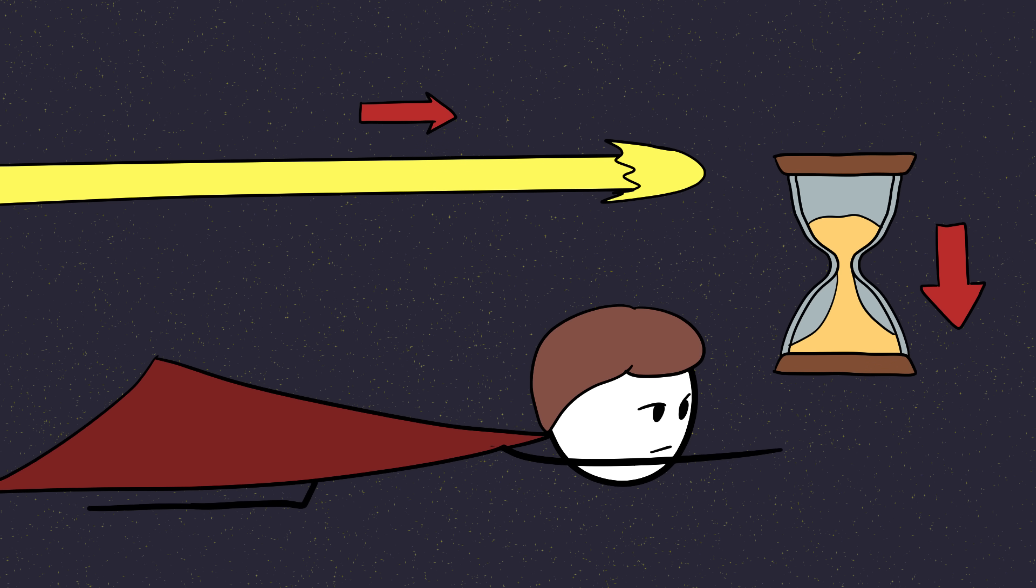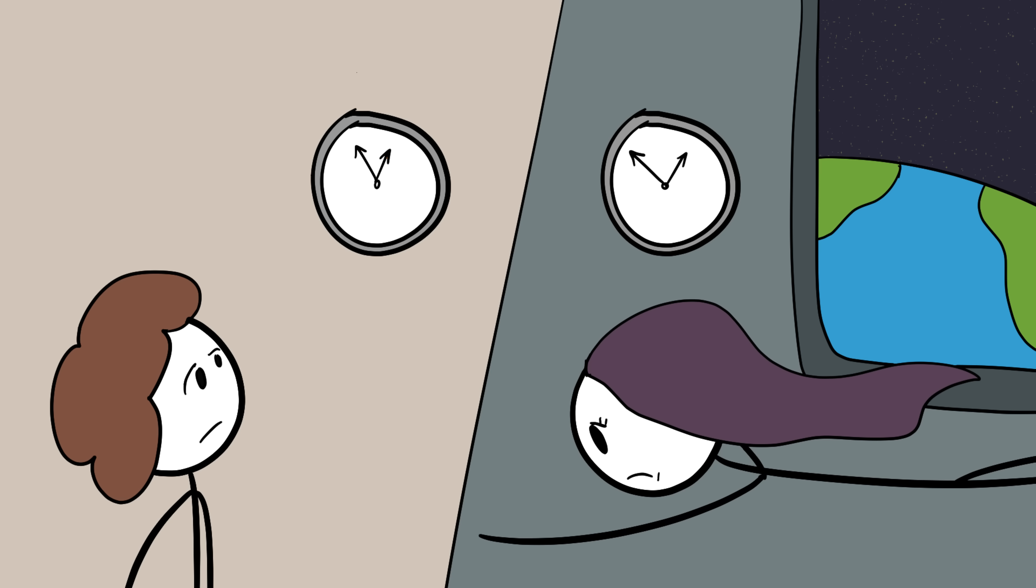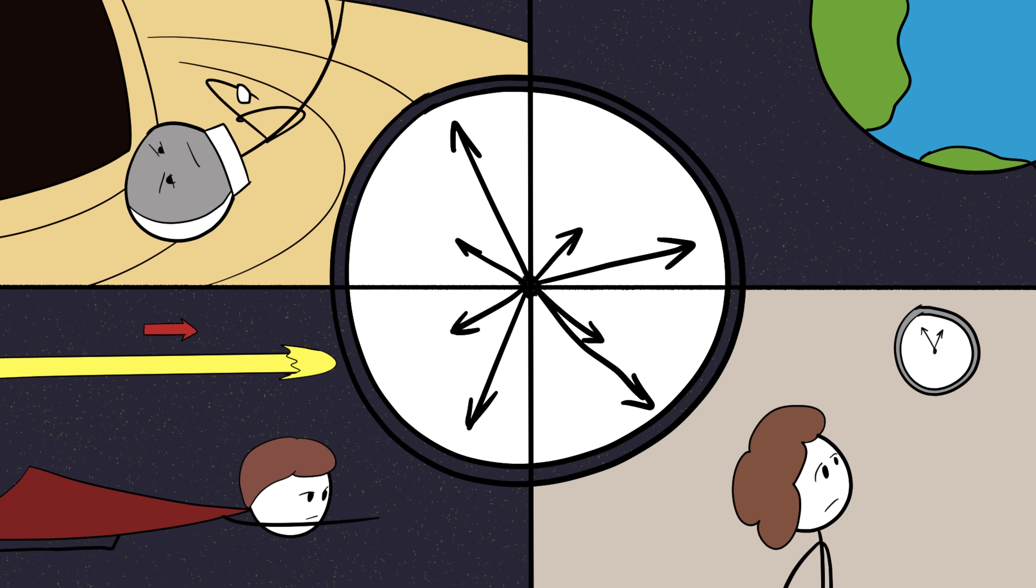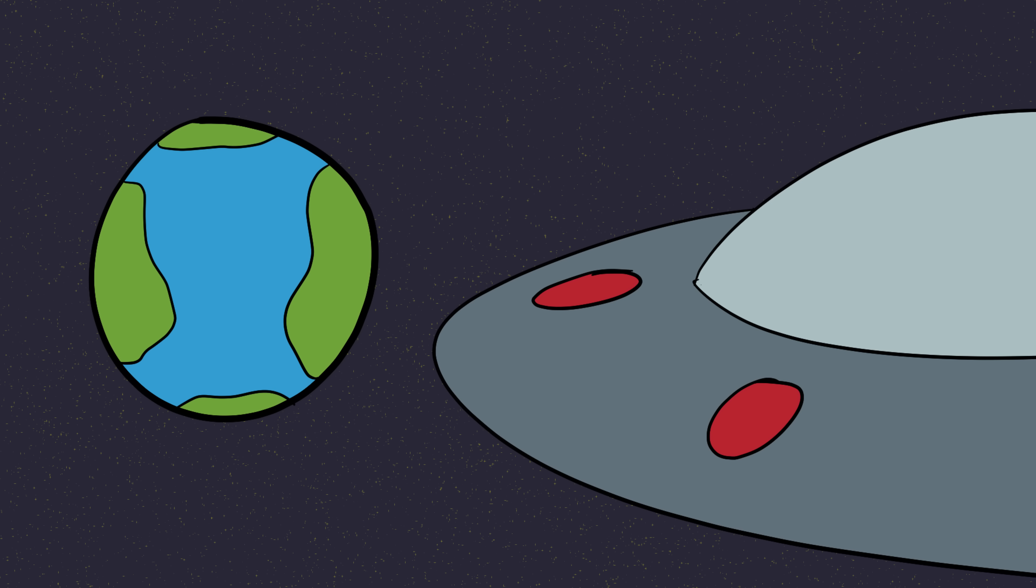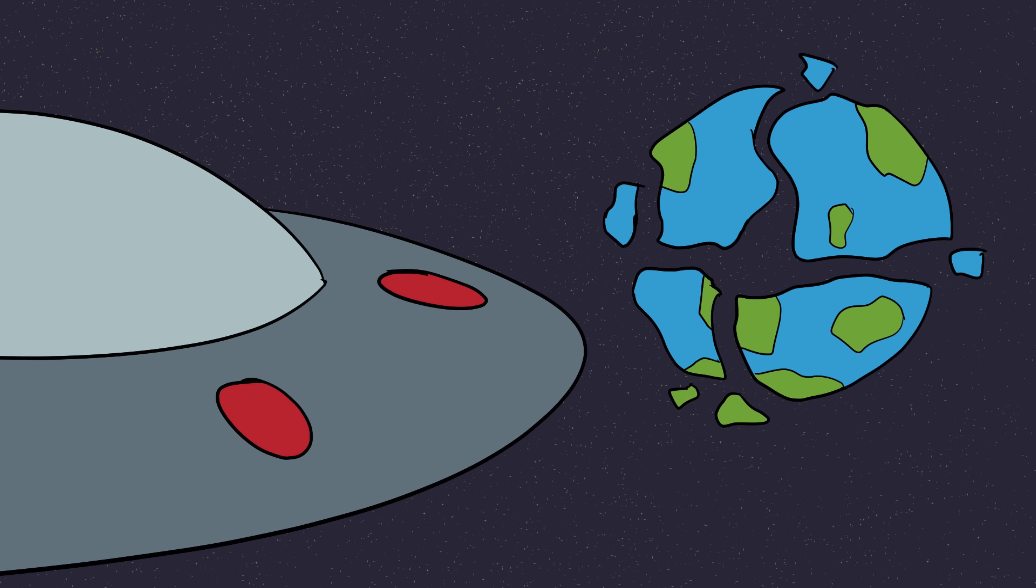But it's not just black holes. Even traveling at near light speed messes with time. Astronauts on the International Space Station technically age a tiny bit slower than we do on Earth. Not by much, just a few milliseconds, but it proves the point. Time isn't stable. It's relative. Now, imagine alien civilizations that cracked faster than light travel. Their sense of time might be completely different. They could visit Earth, leave, and come back five minutes later only to find 10,000 years have passed here. That's cosmic horror at its finest.